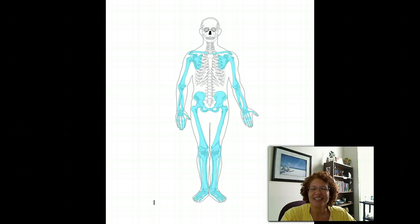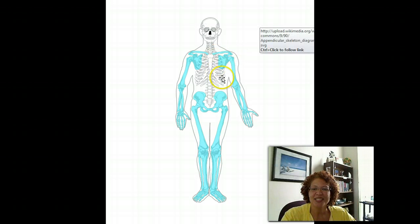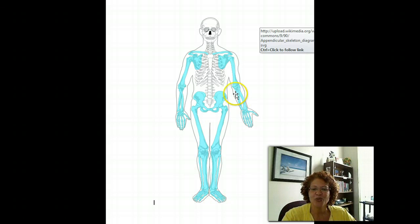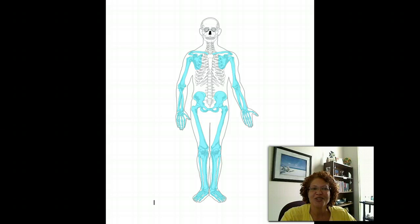The first set of terms pertain to the skeletal system itself. As we all know, the average adult has approximately 206 bones. These bones are broken up into two categories. We have the appendicular skeleton, which is outlined in blue, and that actually contains 126 bones. It is made up by the upper and the lower extremities.